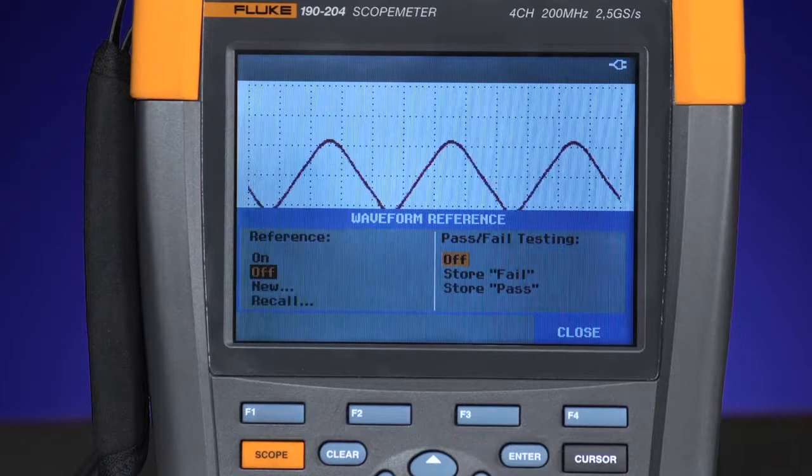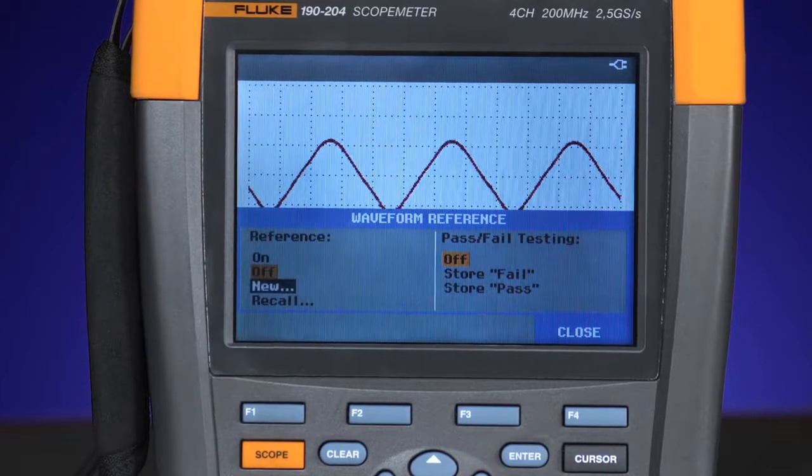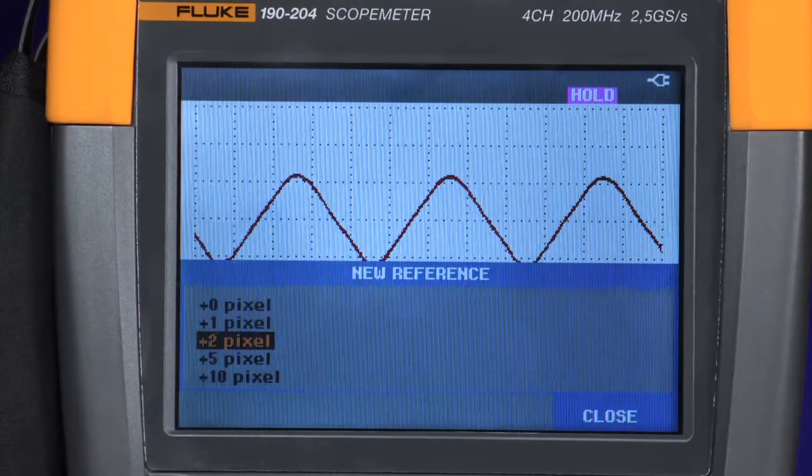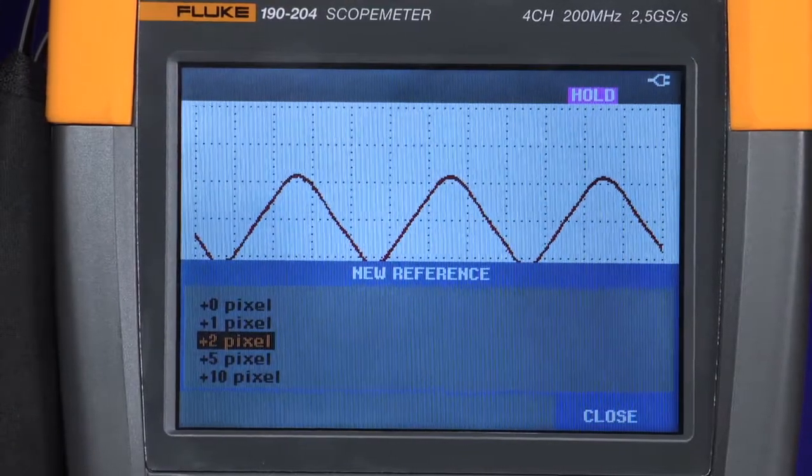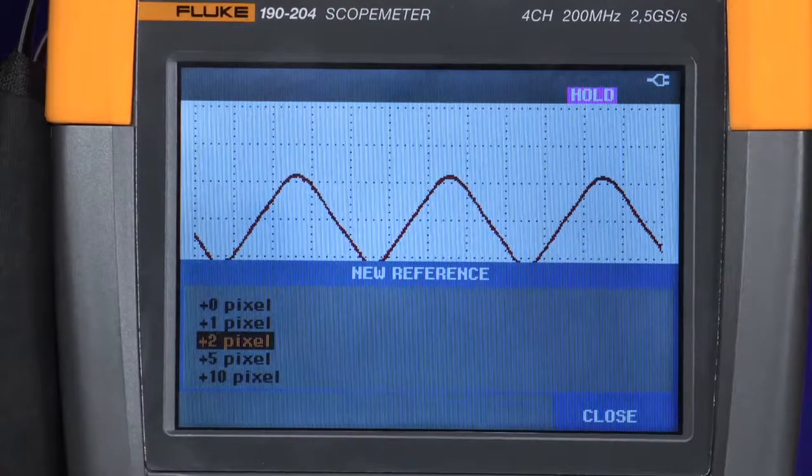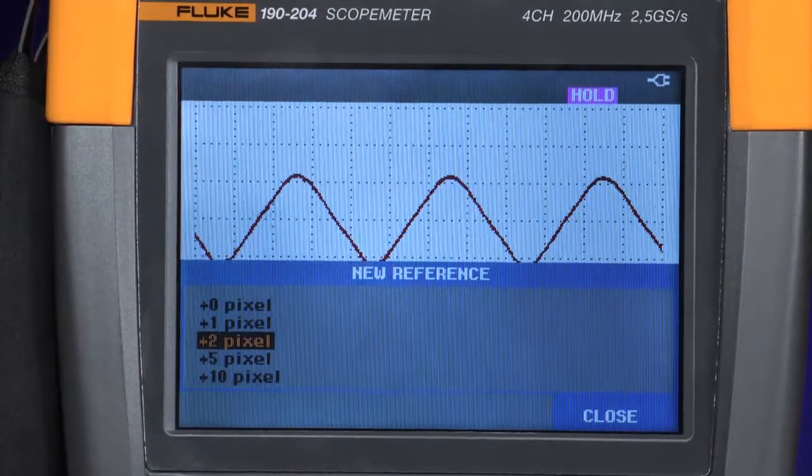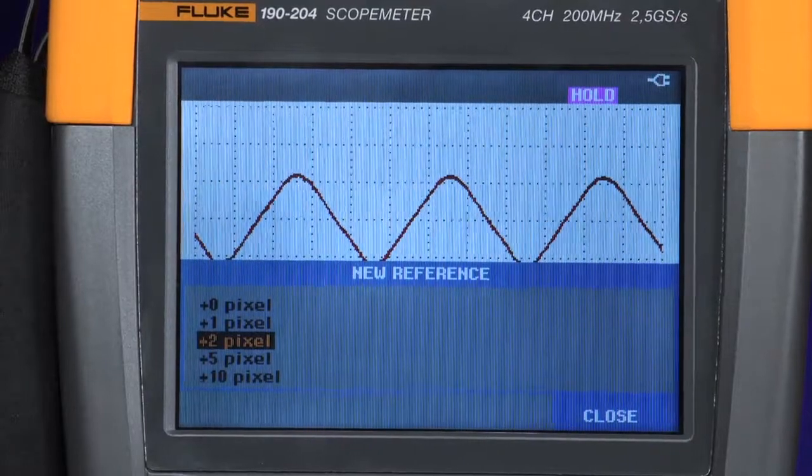In the waveform reference menu, choose a new reference envelope. Here is where you define the window of tolerance by the number of pixels. In this instance, we'll choose a relatively tight window by selecting plus 2 pixels around the known good waveform, then pressing enter.